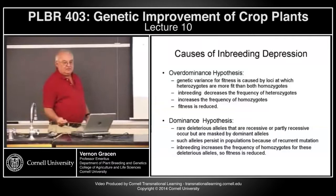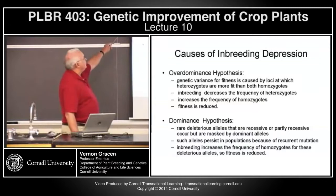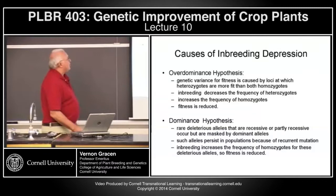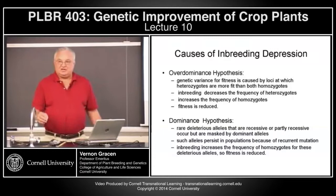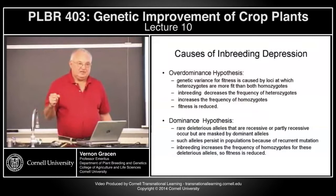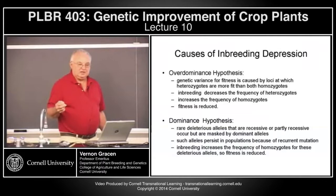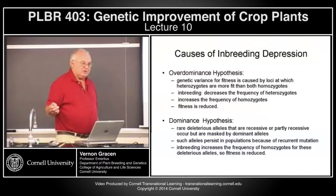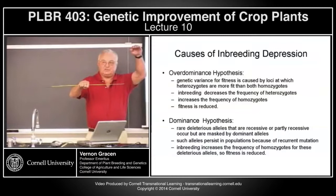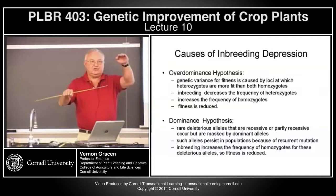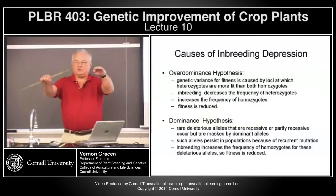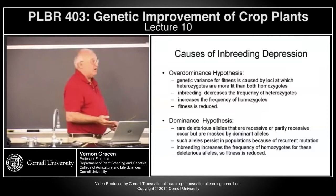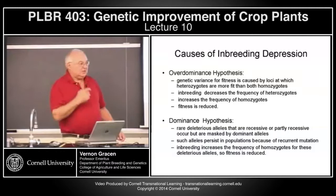What could cause this inbreeding depression? Two general hypotheses. First, over-dominance: genetic variance for fitness is caused by loci at which the heterozygous state is more fit than either homozygous state. If you're inbreeding, you decrease the frequency of heterozygous loci and increase the frequency of homozygous loci, so fitness is reduced. This is like saying that instead of having a dominant and recessive allele, you have two different functional alleles, and the heterozygote producing both gene products is more productive than either homozygote.